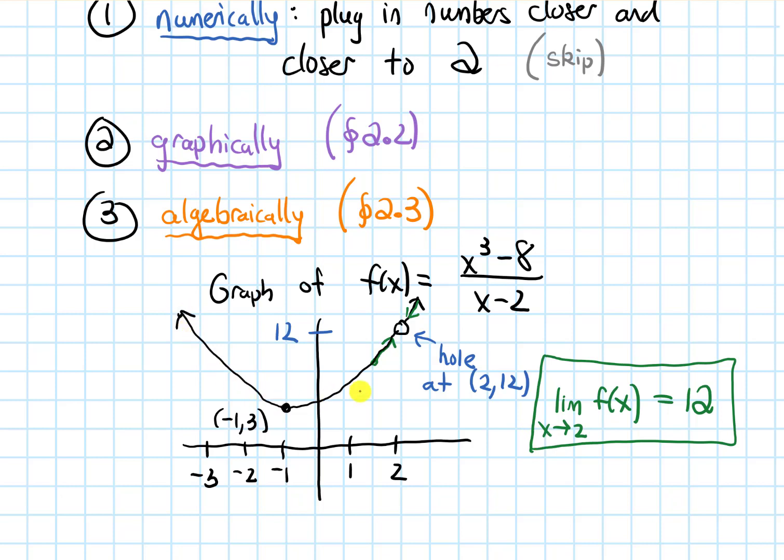Don't worry too much about how I got this exact graph. What I care most that you understand is, once I have the graph, how do I know what the limit is by looking at it? To actually get this specific graph, I would need to simplify this function a little bit algebraically, and that's going to be something we talk more about in section 2.3.